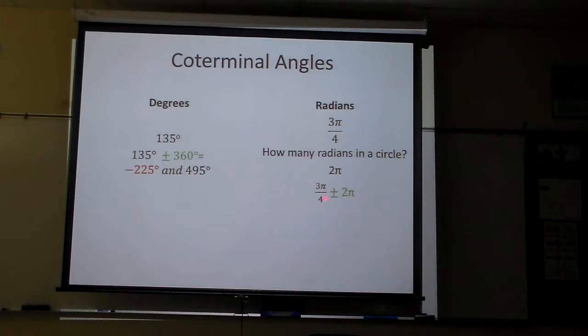2π is going to always be easy. What's the denominator right there? 4. So I put a 4 underneath here. And what's 2 times 4? 8.